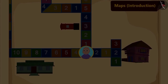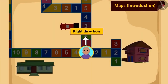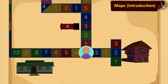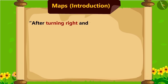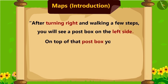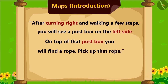Isn't it easy? Now Bablu also understood right and left and turned towards right. He read the instructions further. After turning right and walking a few steps, you will see a post box on the left side. On top of that post box, you will find a rope. Pick up that rope.